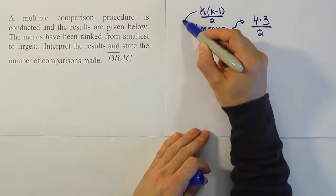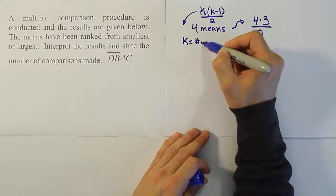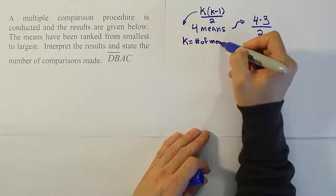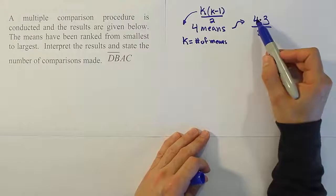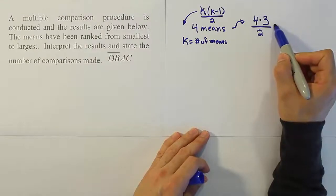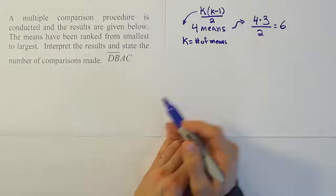Where k here is equal to the number of means. There are four means, therefore our answer is 4 times 3 over 2. That, of course, is 12 over 2, or 6 different comparisons that were made.